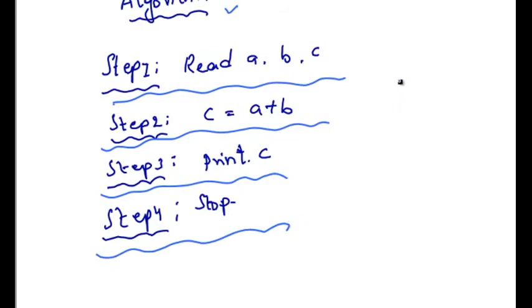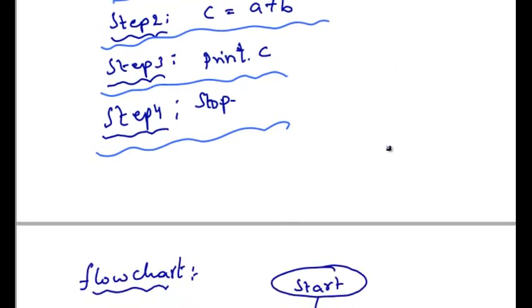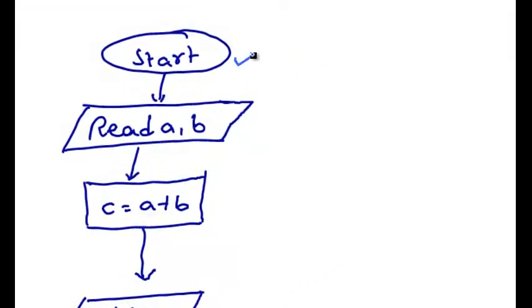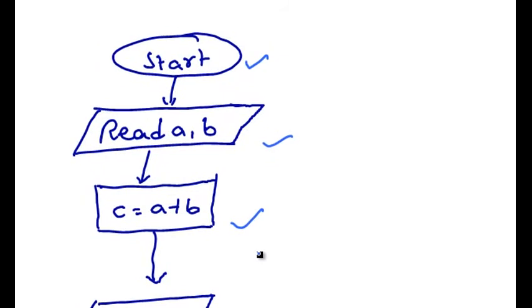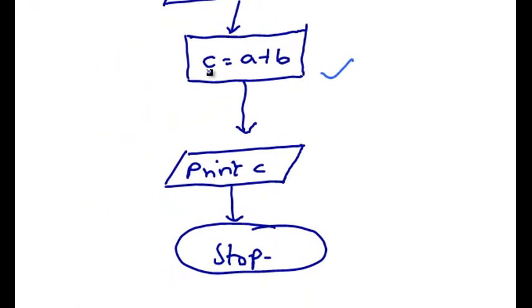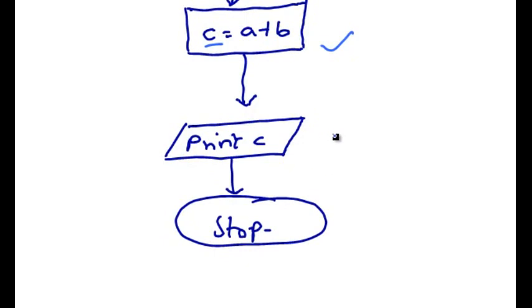Now let's sketch a flowchart for the same problem. It will be as start, starting the program, reading the values of a and b, processing or computing the values of a plus b and assigning them to c. Then printing the value of c which is a plus b and stopping the program.